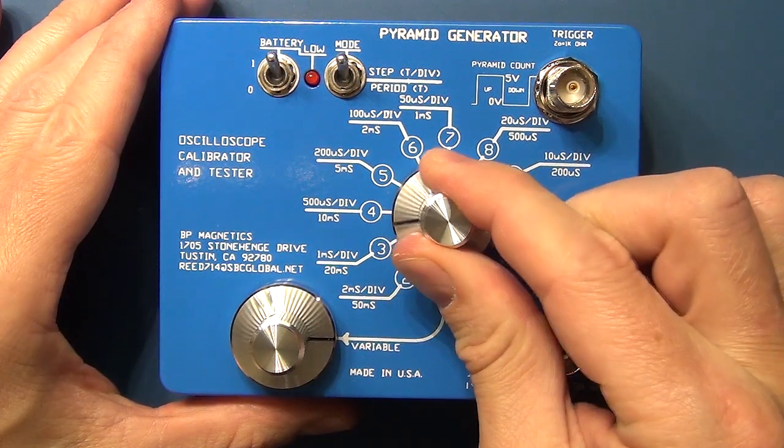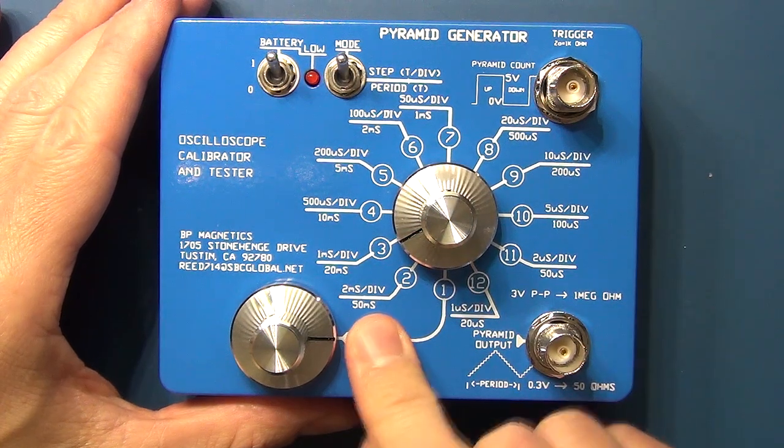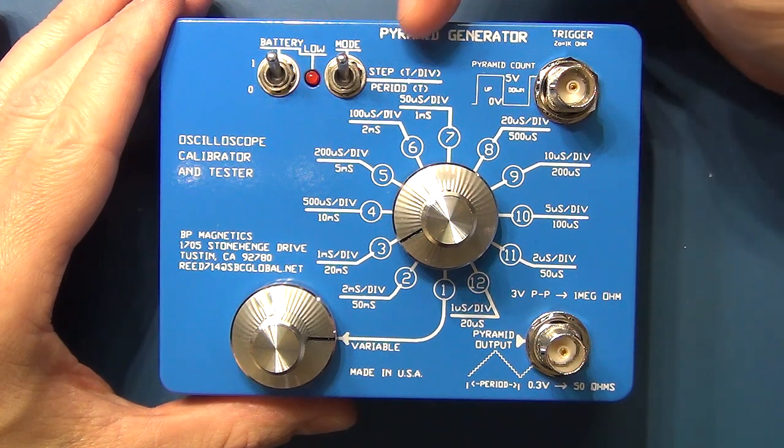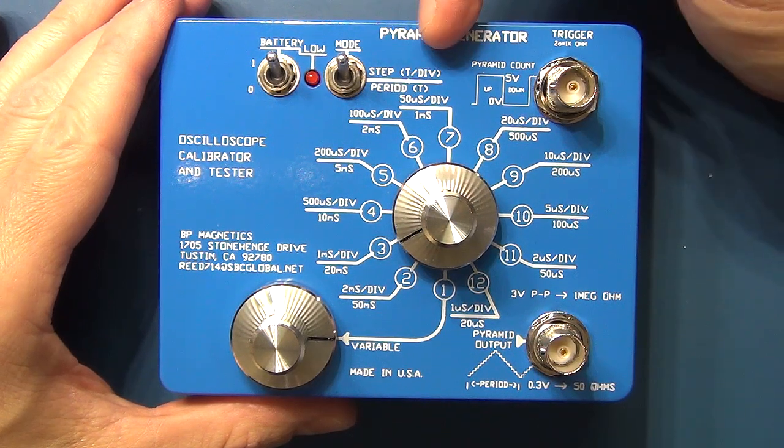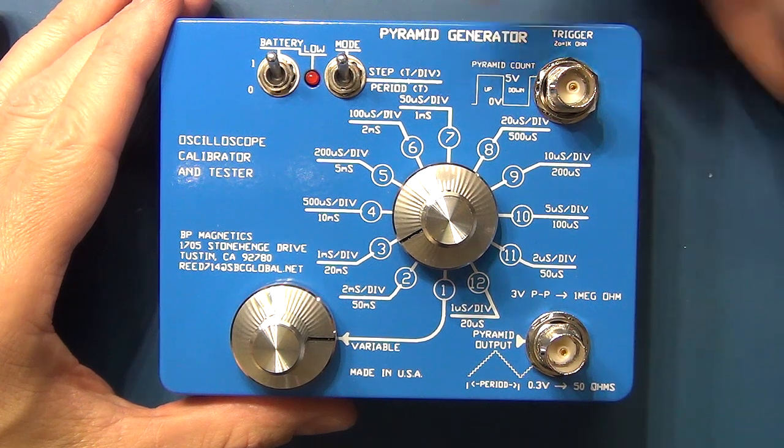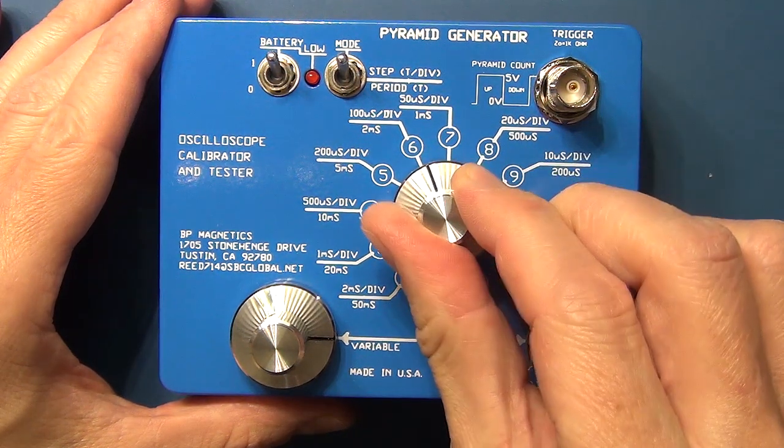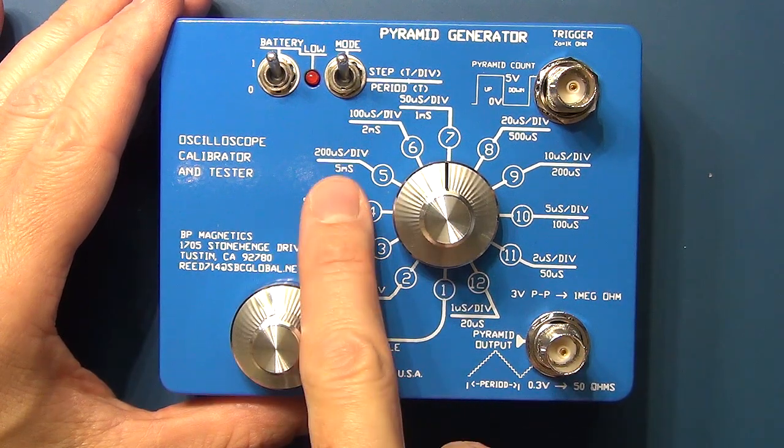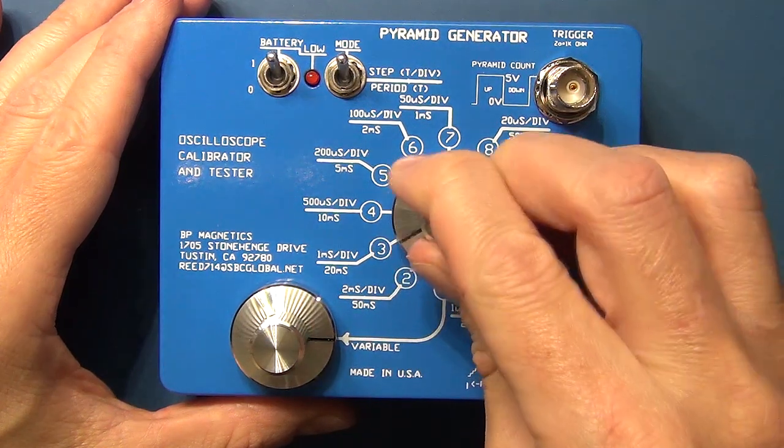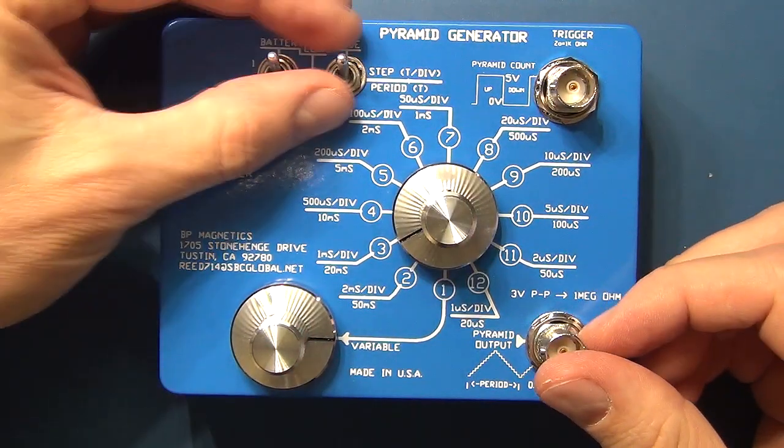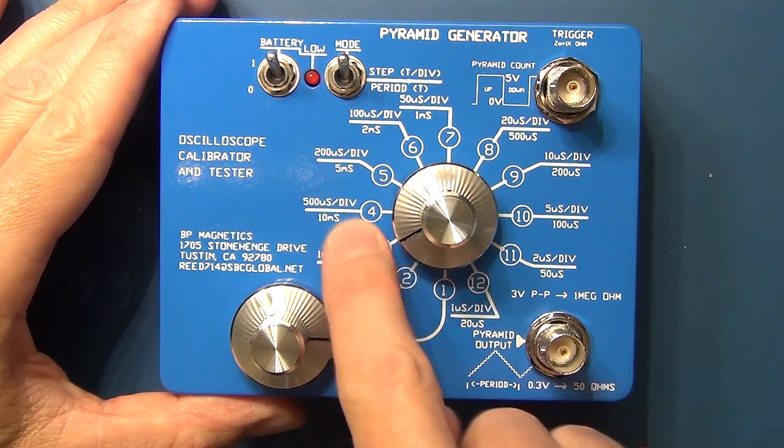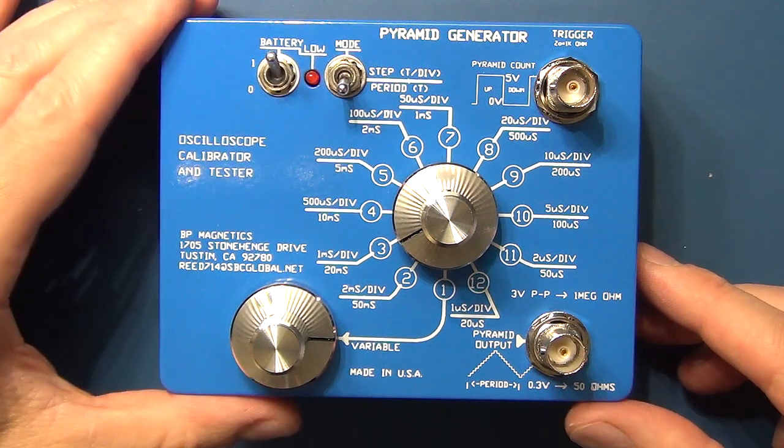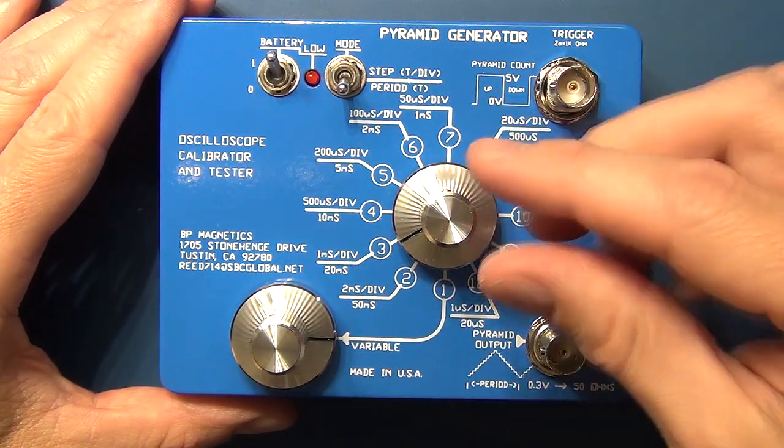The main switch in the middle here goes to select your time base and there's two settings you can have it on. You can either have it set as noted over here as step time per division or the period of the wave. Now for the most part you've got the time base per division noted on there or the actual period. For most of these settings that works straight off with the switch in the up position, but for some of the period settings they're not directly divisible by two so hence he's got this switch which takes it down into a mode where it sets the oscillator to correct for that.